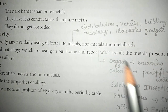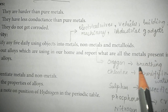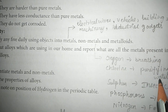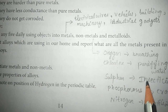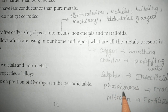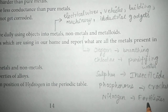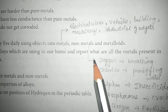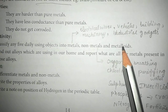Under non-metals: oxygen is used for breathing, chlorine is used for purifying water, sulfur is used in insecticides and crackers, and nitrogen is used in fertilizers. These are all non-metals.